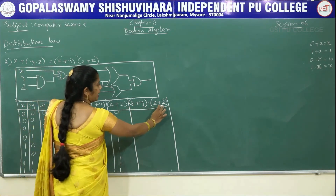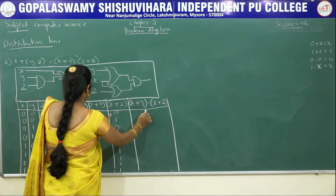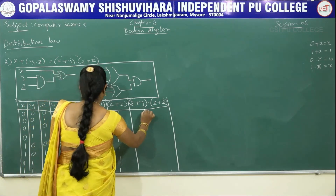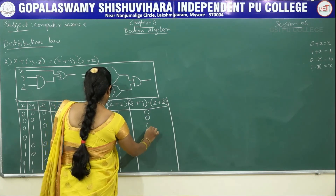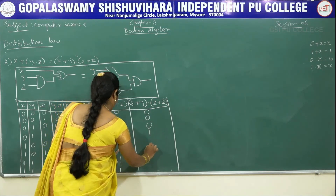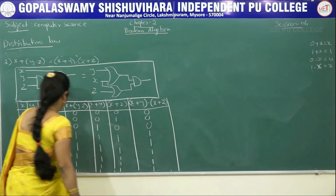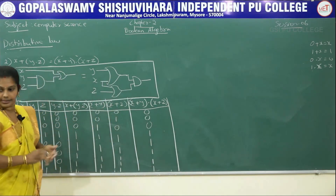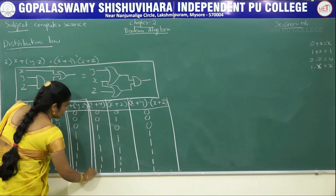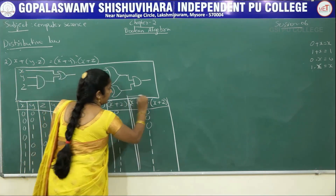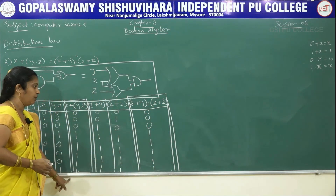For (x+y)·(x+z), taking those two columns with dot operator: 0·0=0, 0·1=0, 1·0=0, 1·1=1, 1·1=1, 1·1=1, 1·1=1, 1·1=1, giving 0,0,0,1,1,1,1,1. This is the same as the x+(y·z) column, proving the law.